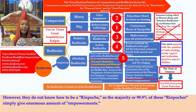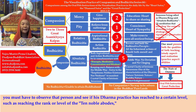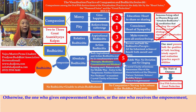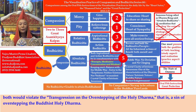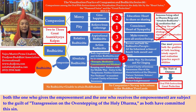The majority — 99.9% — of these Rinpoches simply give enormous amounts of empowerments. Many sutras have mentioned empowerment, and even the 50 Stanzas of Guru Devotion states that when you give empowerment to others, you must observe whether that person's dharma practice has reached a certain level — such as the position of the ten noble abodes as stipulated in the Avatamsaka Sutra — then you can give empowerment. Otherwise, both the one who gives and the one who receives the empowerment would violate the transgression of overstepping the holy dharma, and committing this Samaya transgression will make one fall into hell.